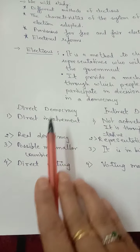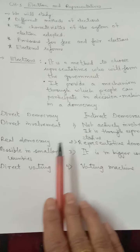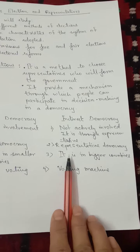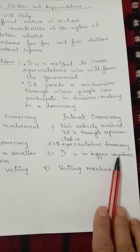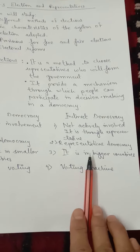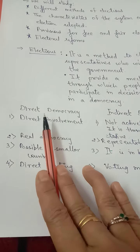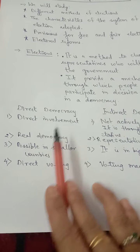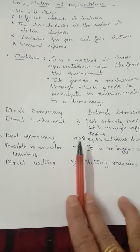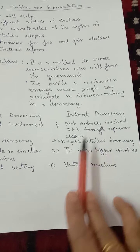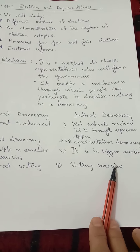Direct democracy is possible in smaller countries, while indirect democracy is practiced in bigger countries. In direct democracy, people do direct voting, and in indirect democracy, voting is done by representatives on behalf of the people.